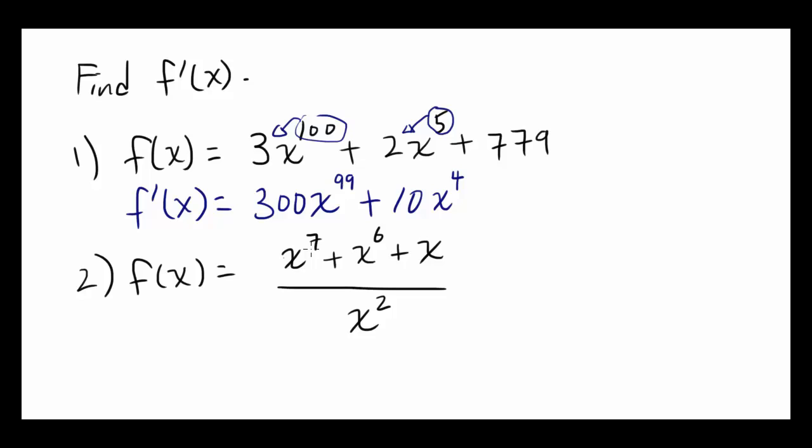The next one, x to the 7th power plus x to the 6th power plus x over x squared. How you can think about doing this is by rewriting the entire function, by dividing its term in the numerator by x squared.